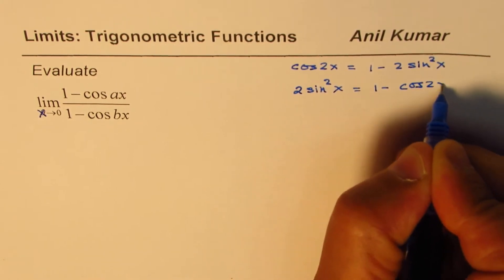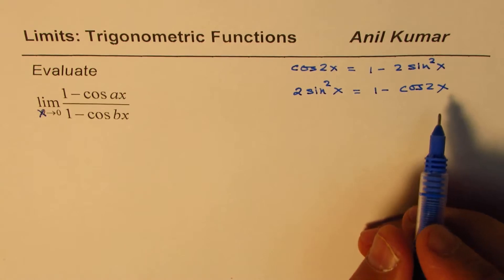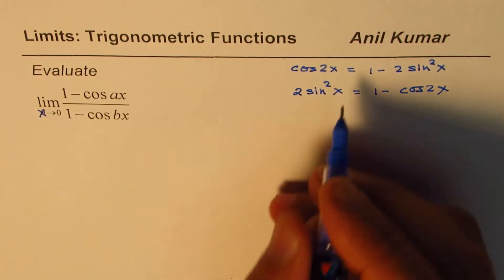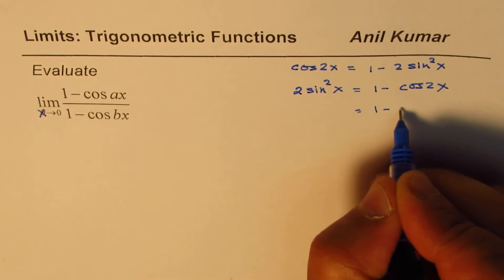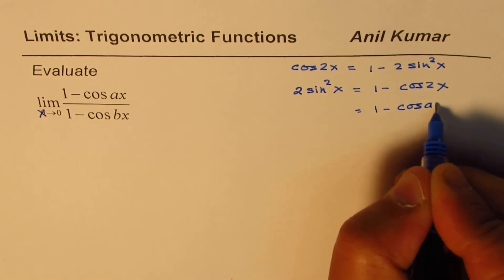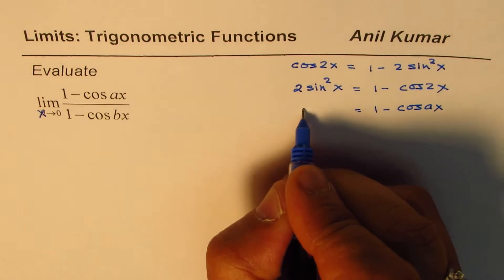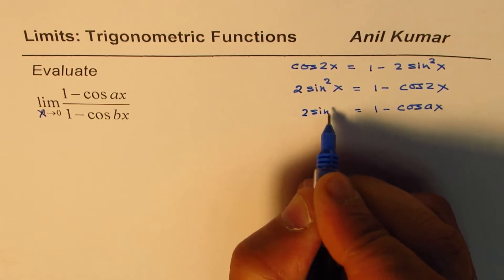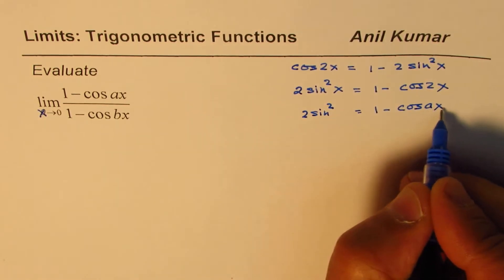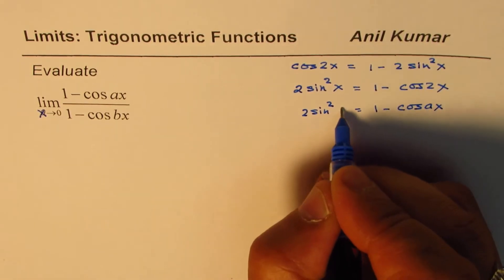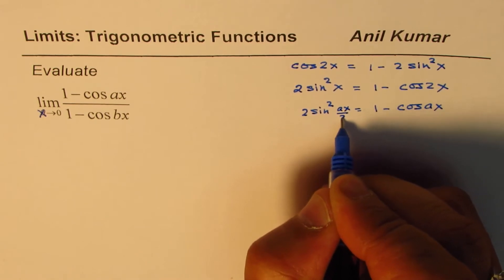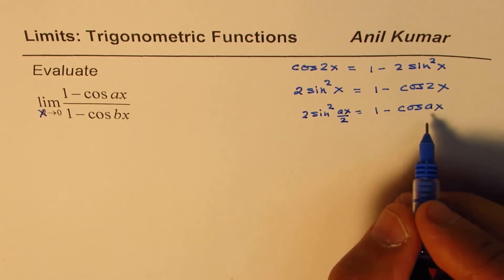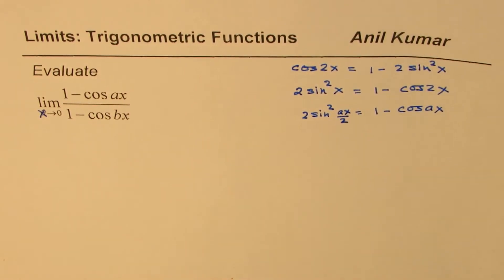Here we have ax and bx. Well, this is half of that, so if I have 1 - cos ax, I could write this as 2sin²(ax/2). Similarly for bx it will be 2sin²(bx/2).